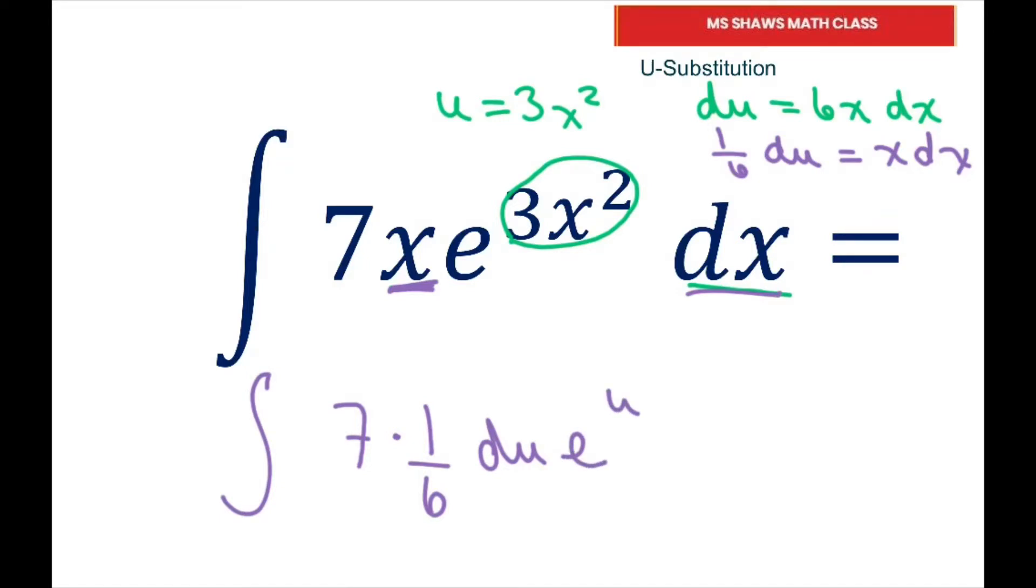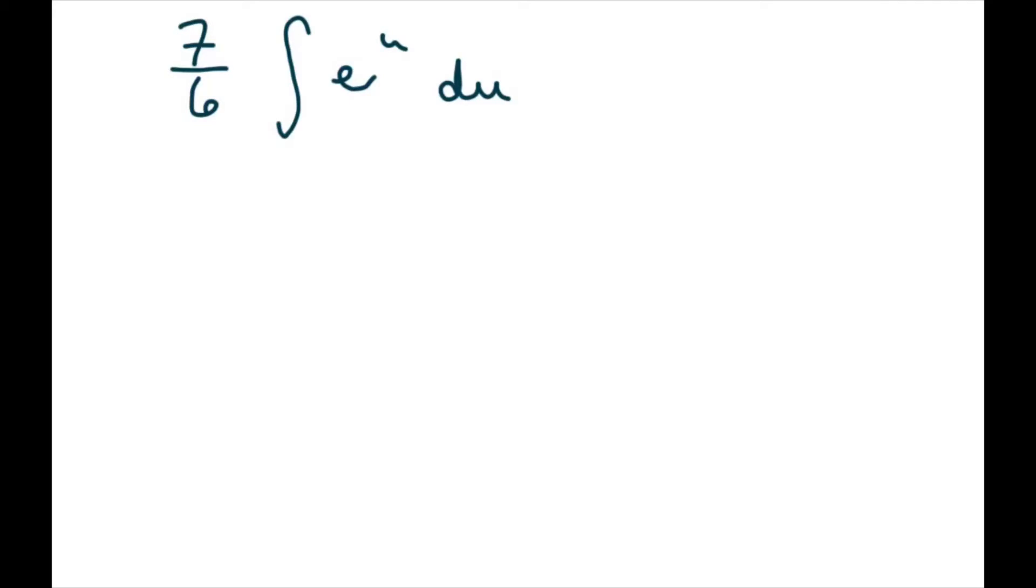So basically when you rewrite this, I can pull him out front. That's 7 over 6. And the integral of, and I'm going to write e to the u first, and then du. So we just did two things there to rewrite that. And now all we have to do is integrate and evaluate it.